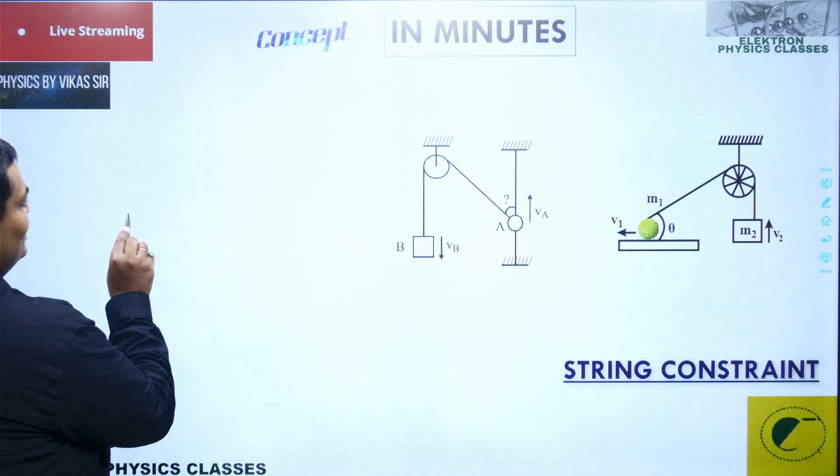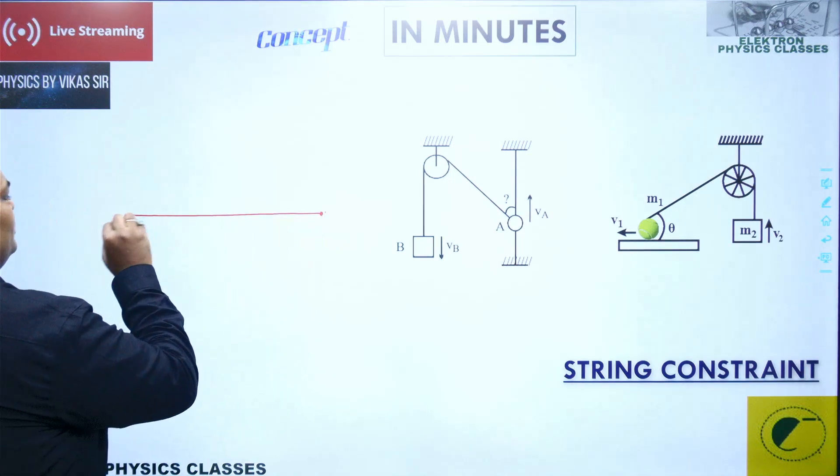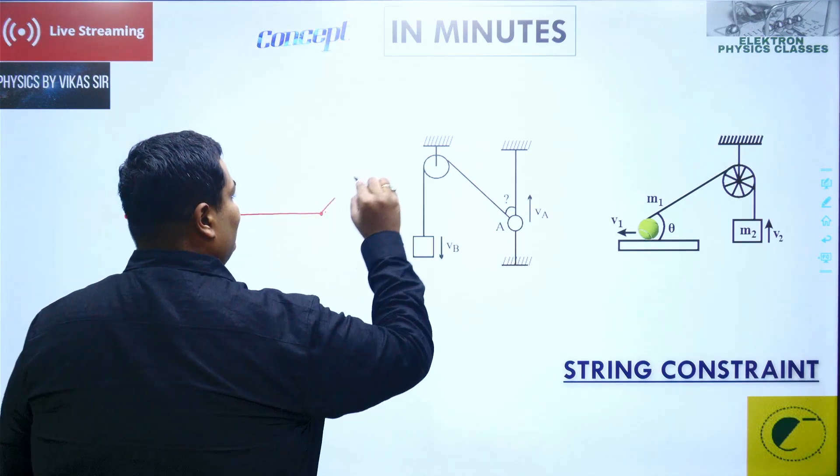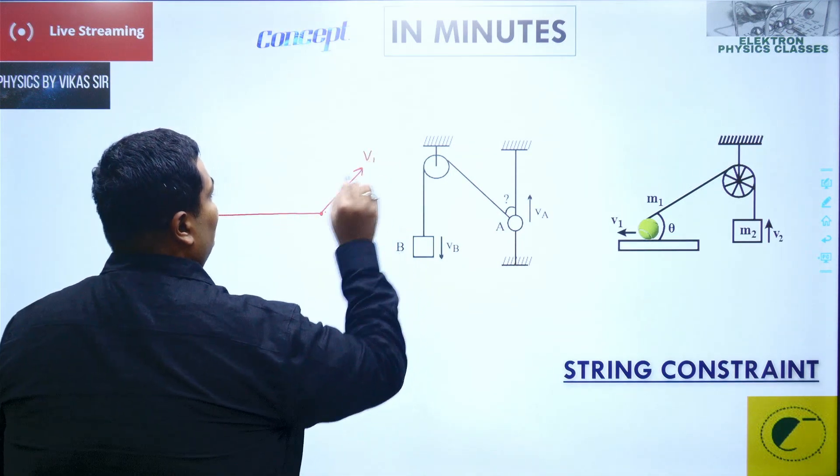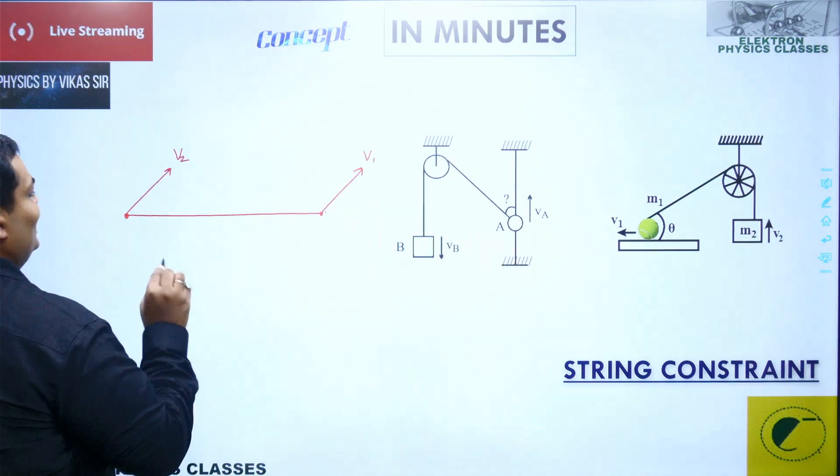And what's the string constraint? See, this is a string and these are the two ends of the string. This end is having some velocity, let's say v1, this end is also having some velocity v2, and let's say